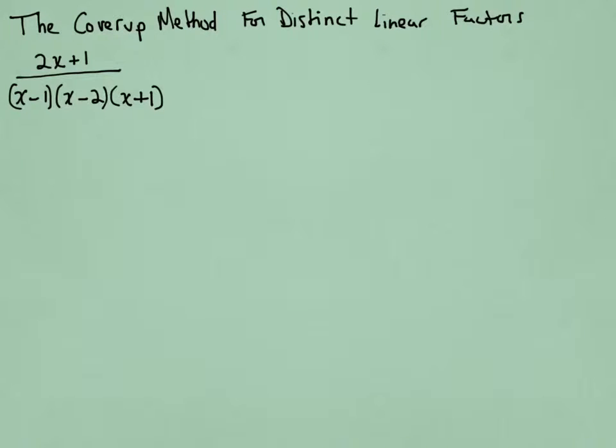In this video, we'll look at a quick way of finding the partial fractions decomposition when looking at a distinct linear factor situation in the rational expression. In this case, I've got 2x plus 1 with 3 distinct linear factors. We know that this should decompose into 3 terms, one for each of those factors. We need to find the numbers A, B, and C that are their numerators.